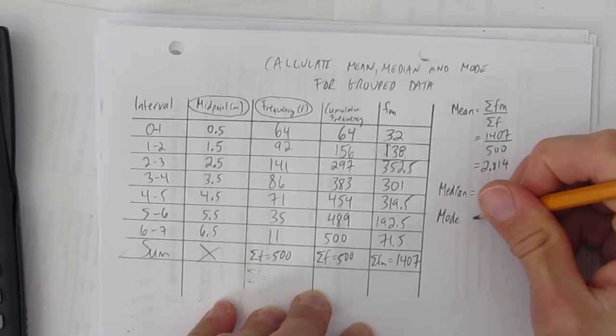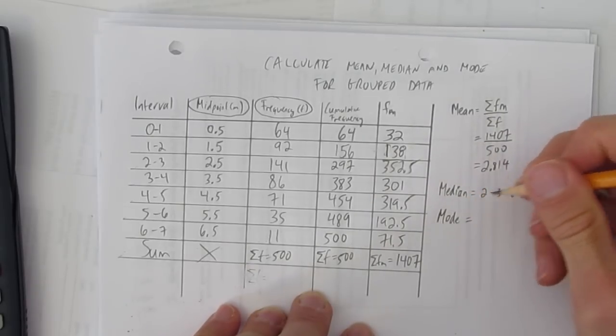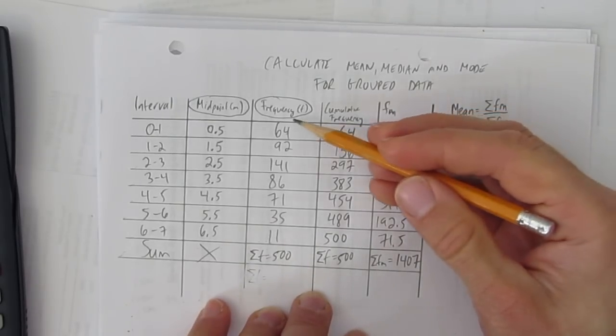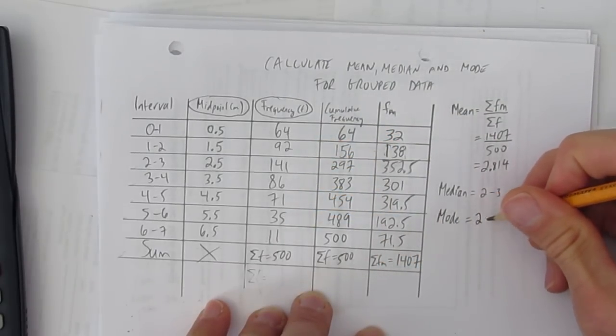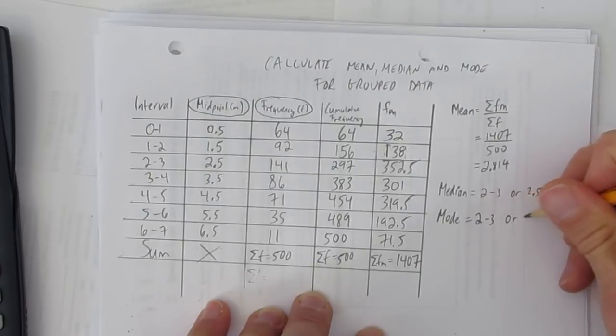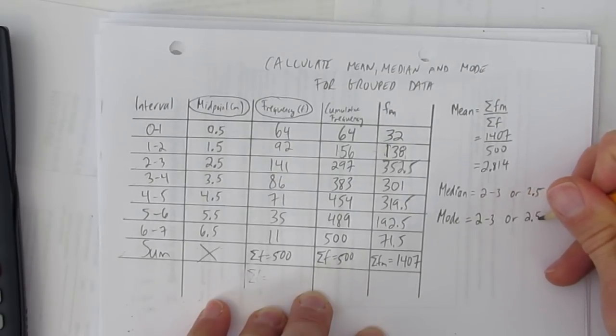And what's the mode? That would be the interval or midpoint that comes up the most. What comes up the most here? Check your frequency table. And you see the thing that occurs the most is, again, the interval 2 to 3. Or call it by its midpoint, 2.5.